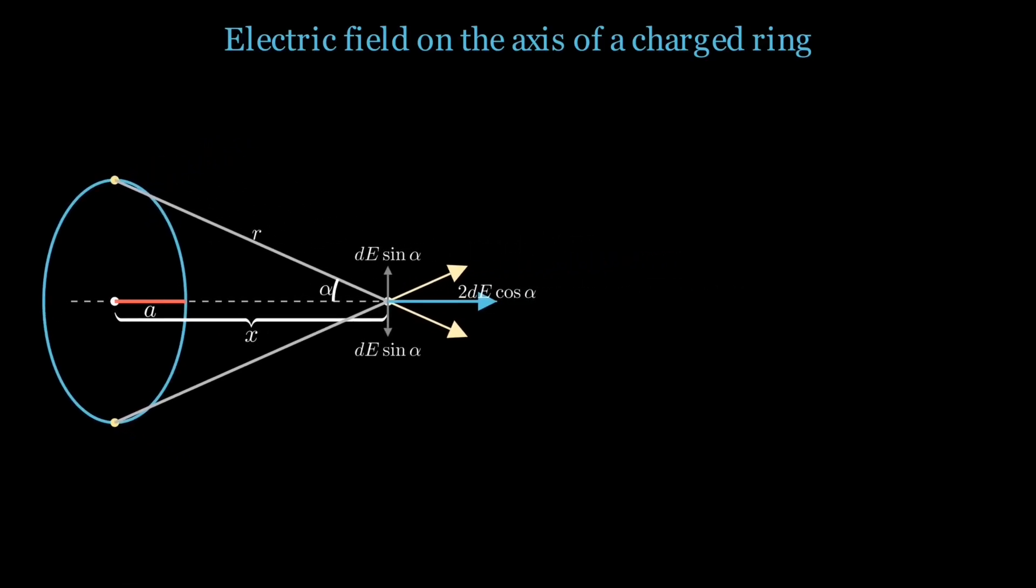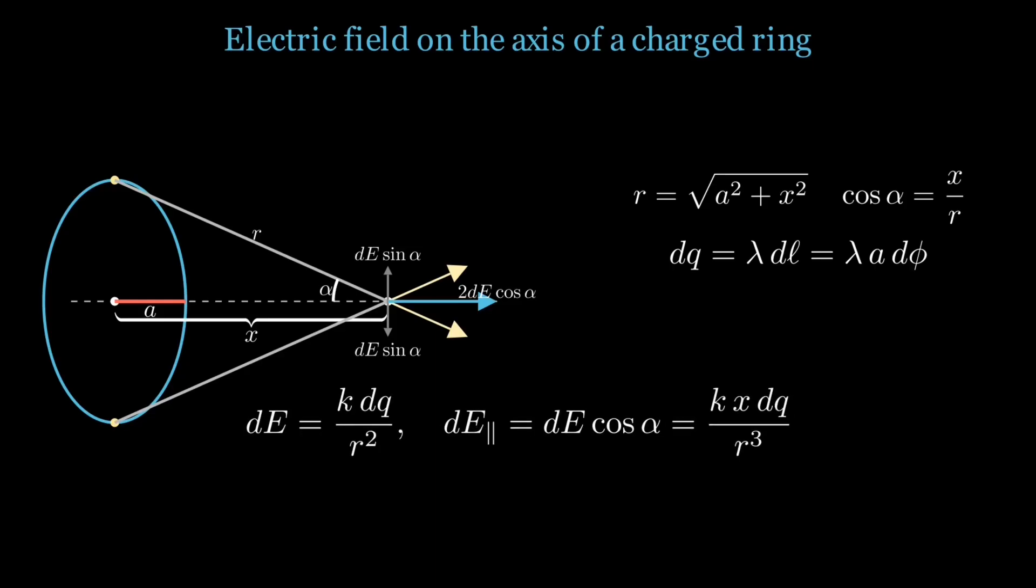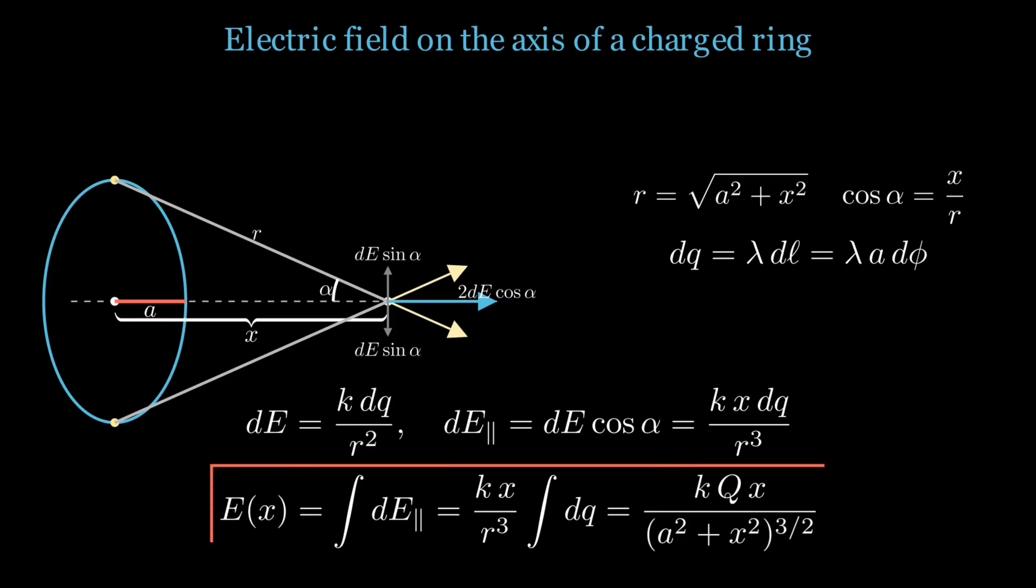Adding all those aligned contributions is straightforward, and going once around the ring just replaces the sum of tiny charges with the total charge. The result is a compact formula that shows how the field peaks near the ring and falls off far away. It's a neat example of symmetry doing the hard work, the geometry setting the weight of each piece, and the integration simply sealing the deal.